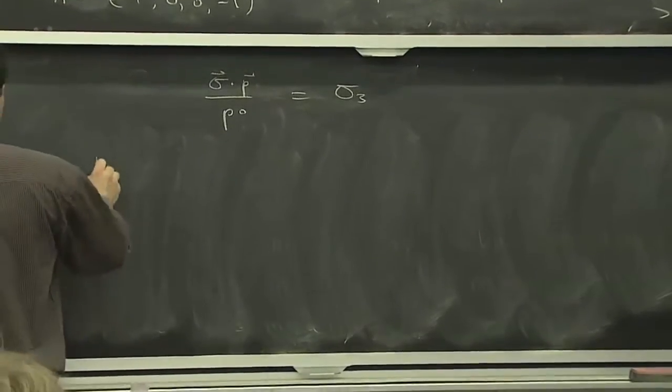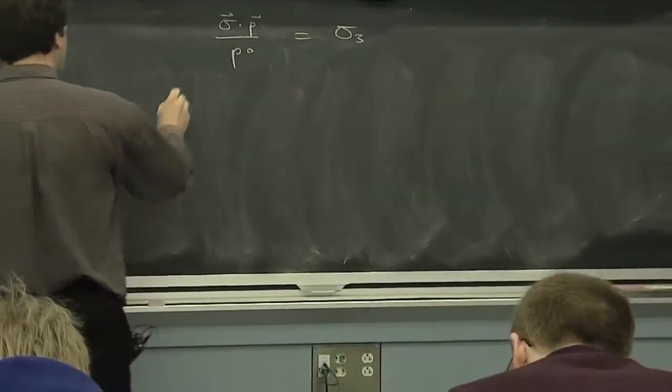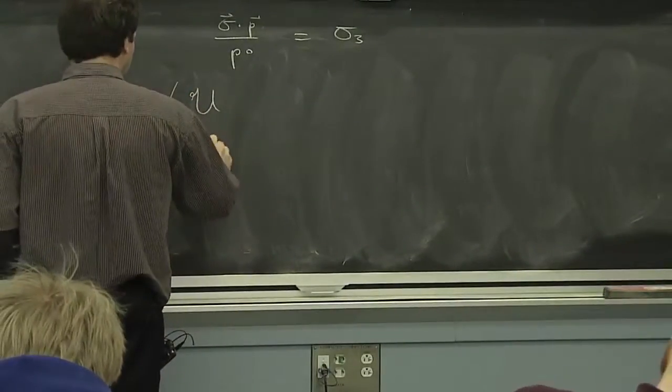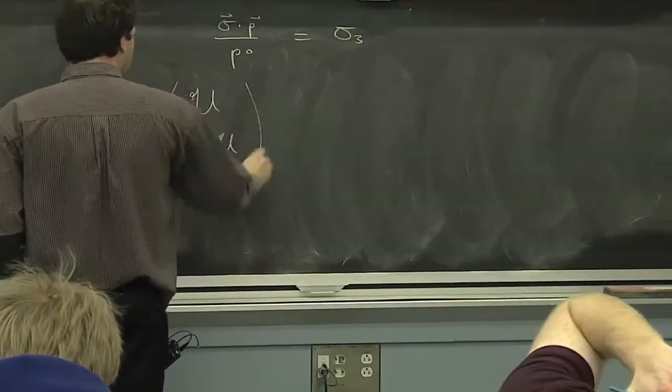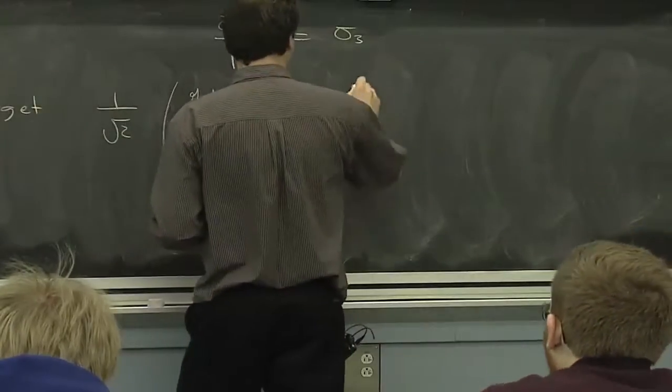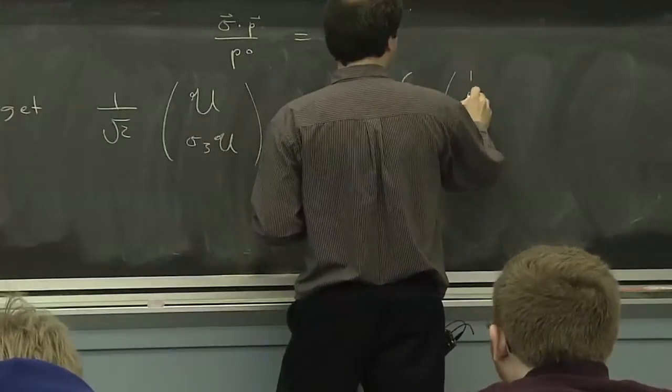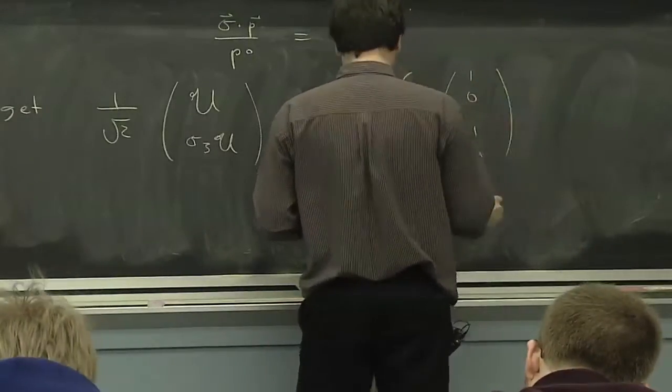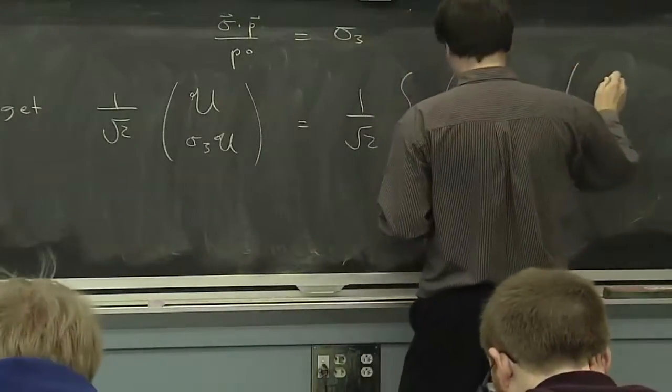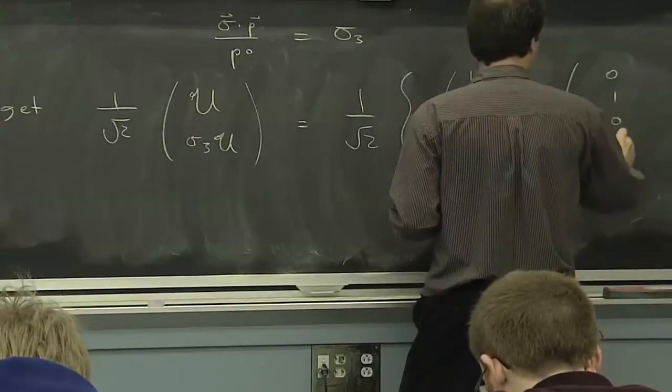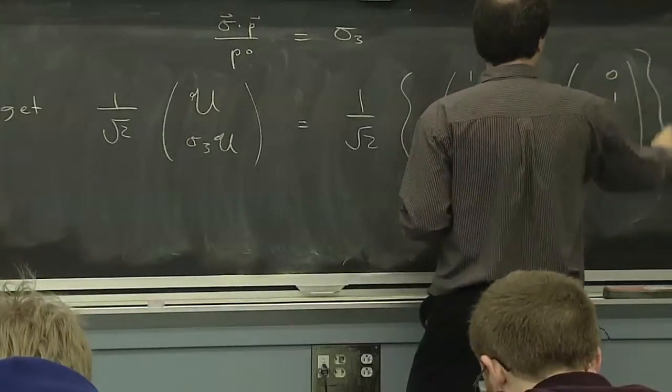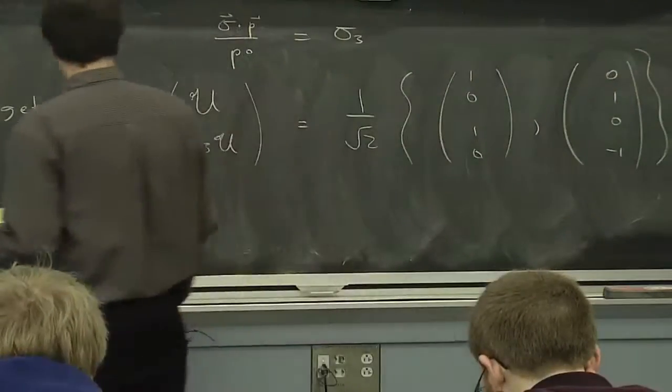So what you get from this, then, would be guys that look like this, which if I put in the two possibilities for the curly U, are four component spinors that look like this for U.